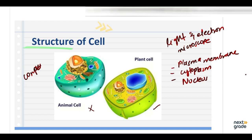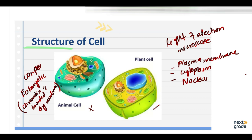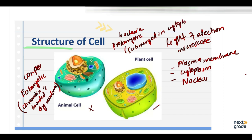On the other hand, primitive types of cells such as bacteria lack a definite nucleus and are said to be prokaryotic. In prokaryotic cells, the nuclear material is directly submerged in the cytoplasm and is not separated by any sort of membrane.